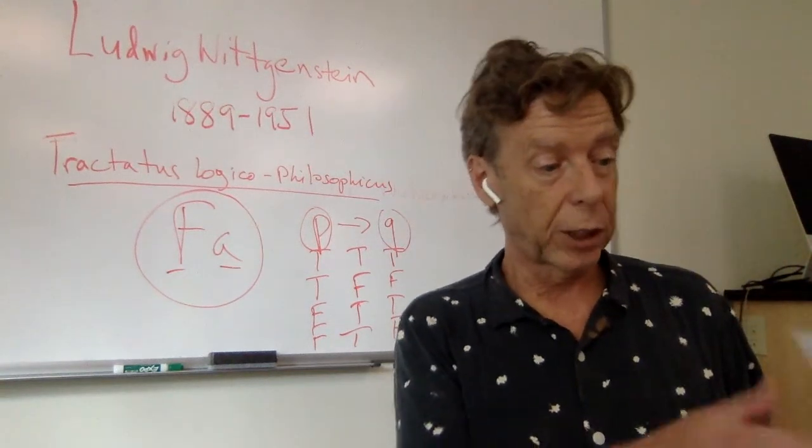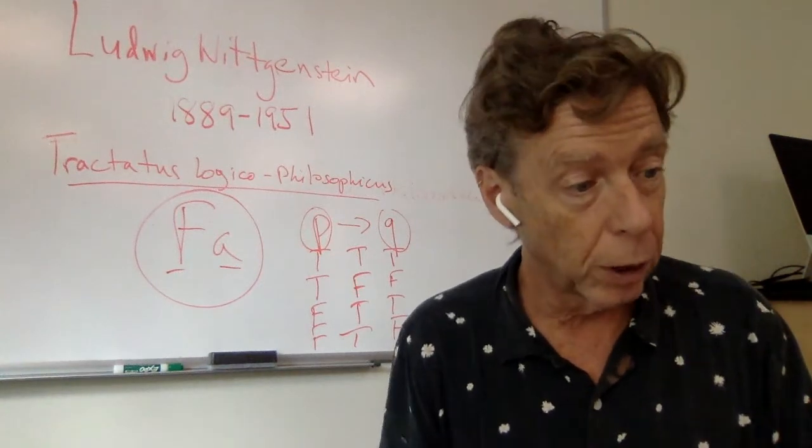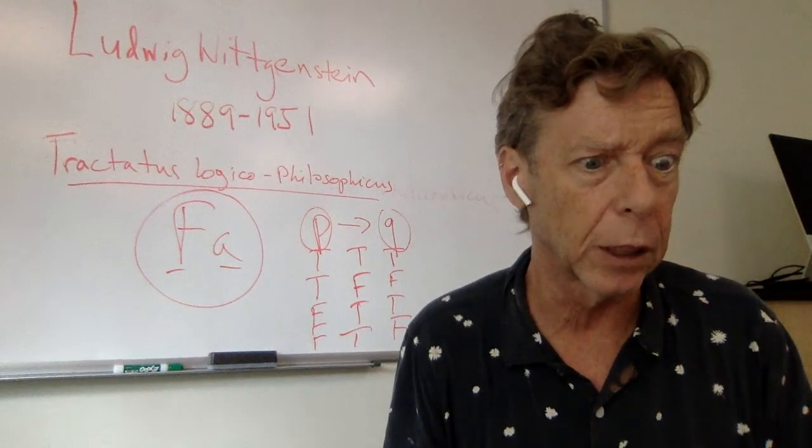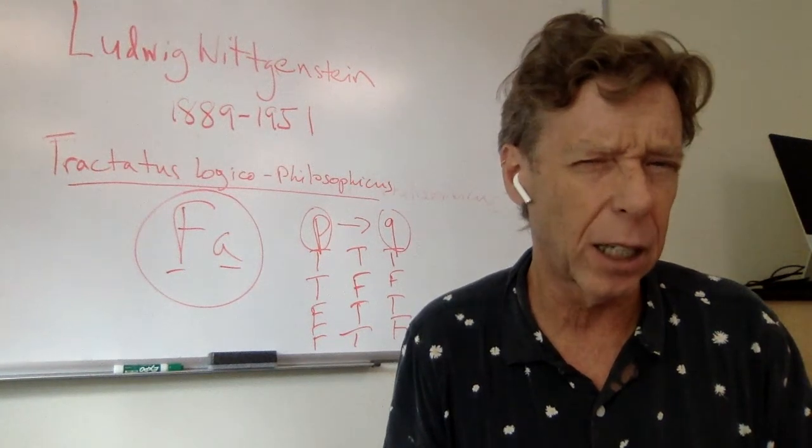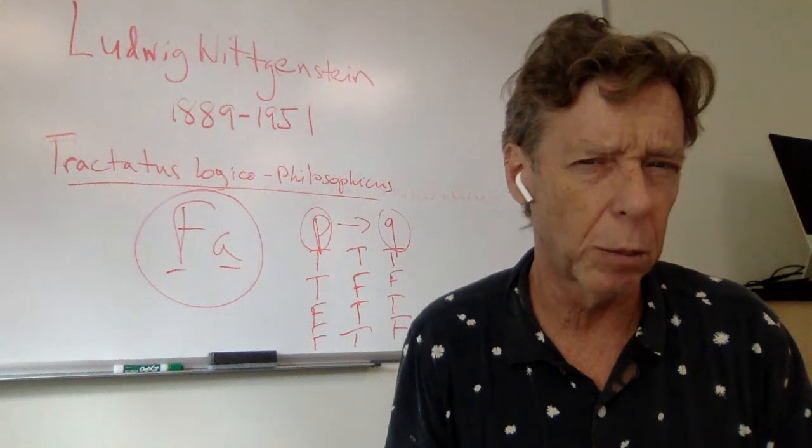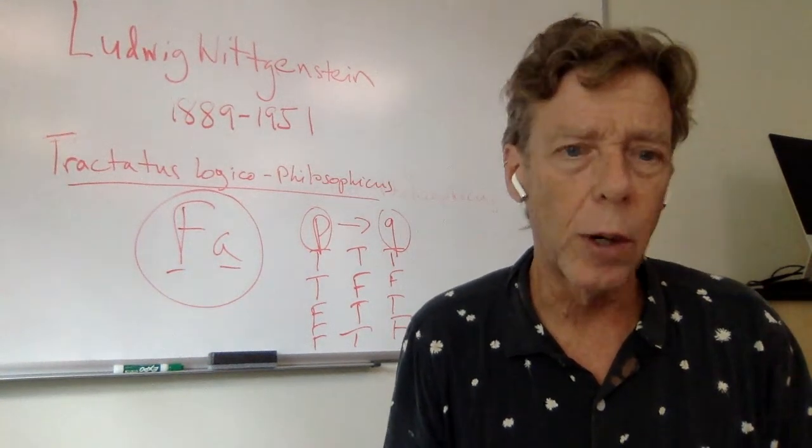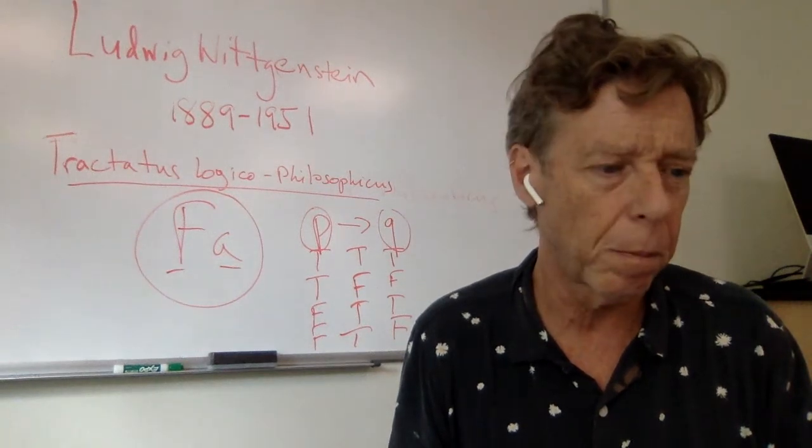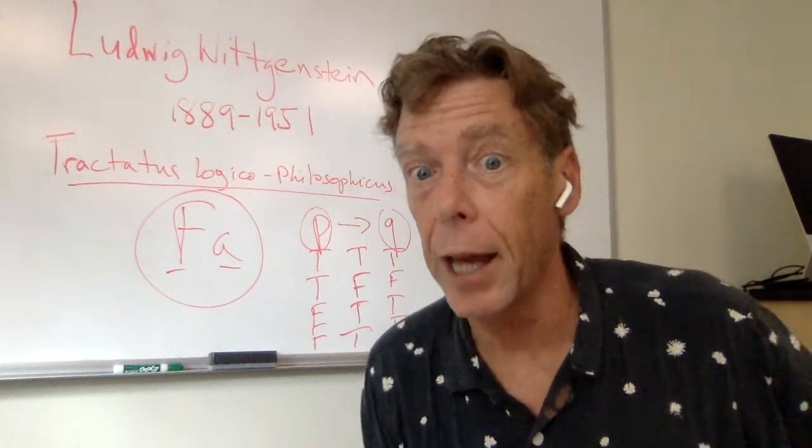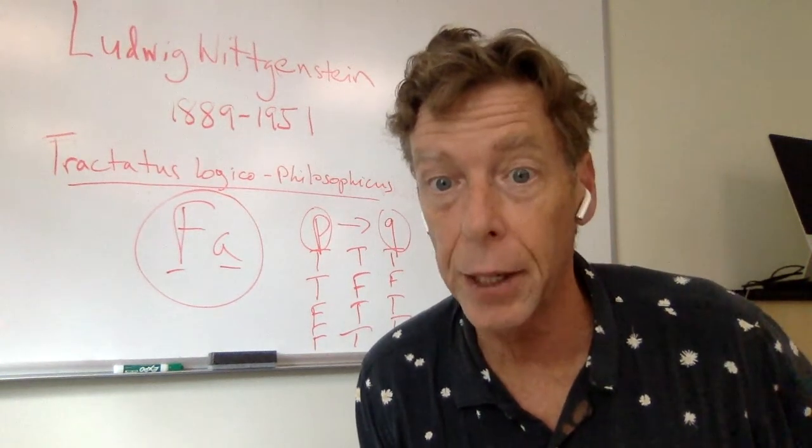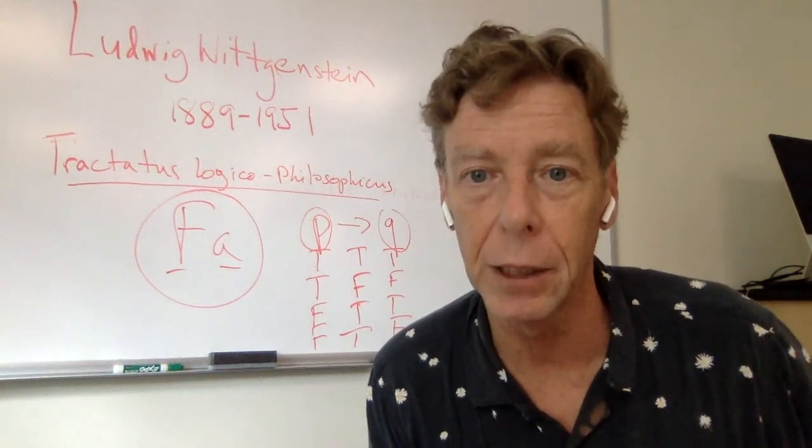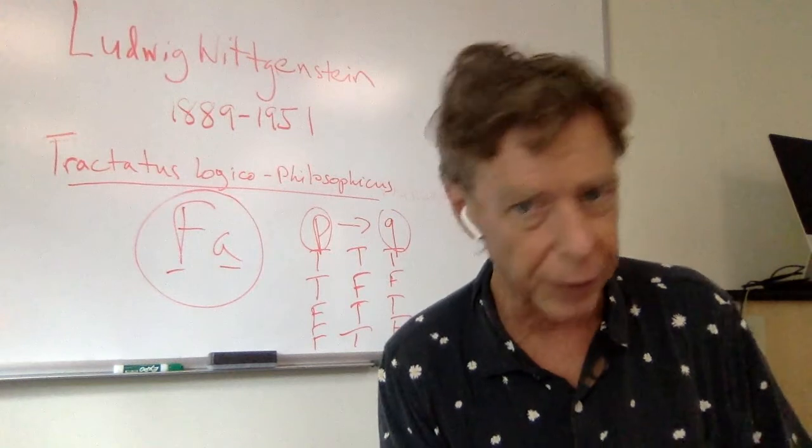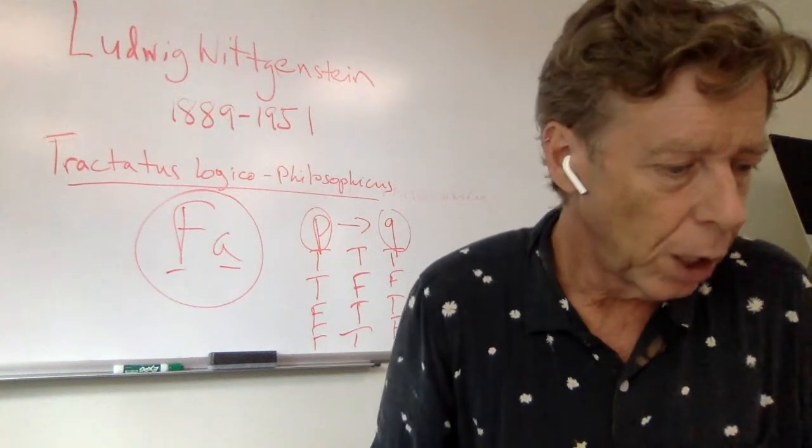He says, this is 6.41 one, if there is a value which is of value, it must lie outside all happening and being so, like outside the empirically detectable universe, for all happening and being so is accidental, and ethical claims are supposed to be necessary in some way. So it must lie outside the world. The fact that an ethical claim mirrors or represents must lie outside the world. But that just means that there can be no ethical propositions by Wittgenstein's definition of proposition. There can be no ethical facts. That's why there can be no ethical propositions.